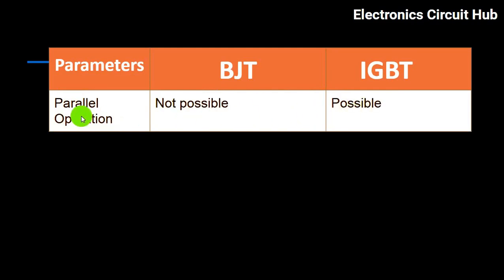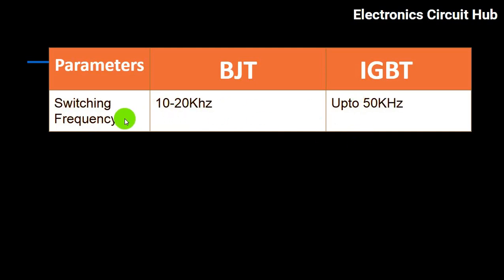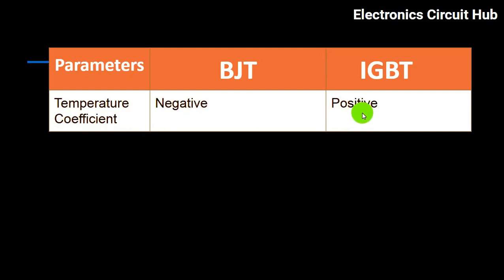For parallel operation: BJT is not possible, IGBT is possible. For switching frequency: BJT is 10–20 kHz, IGBT is up to 50 kHz. For temperature coefficient: BJT is negative, IGBT is positive.